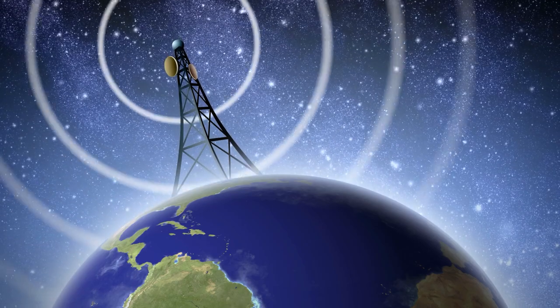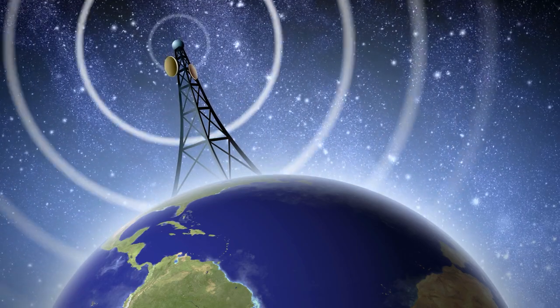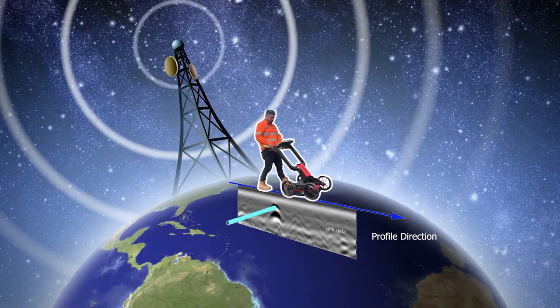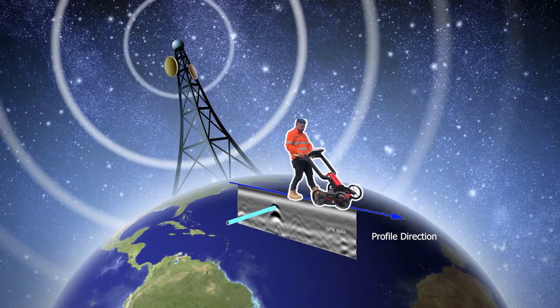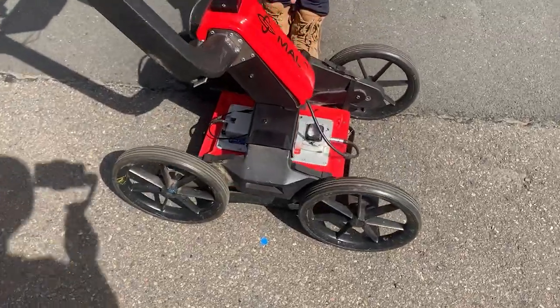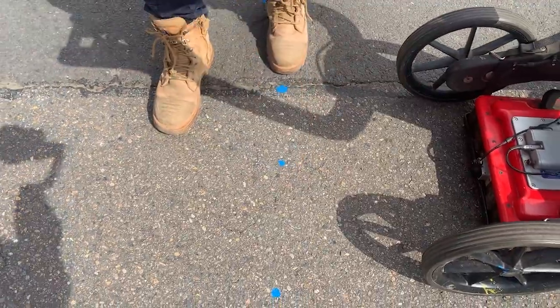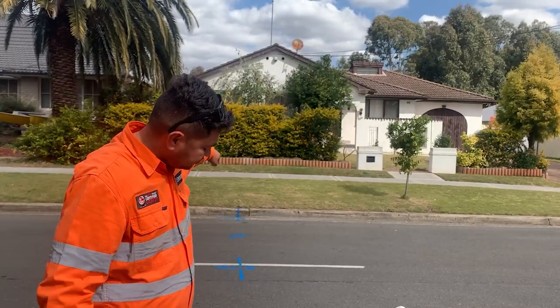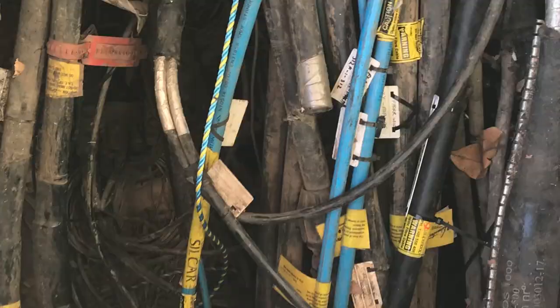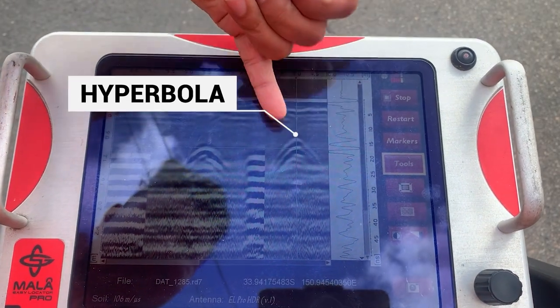Basically, we're firing energy in the form of radio waves into the ground as we push the GPR in the direction of the data acquisition setup. As the energy hits targets underground, we are able to map these points at set intervals as they reflect over different objects. In the case of SUE and utility surveys, pipes and cables are generally round in nature and produce a hyperbola.